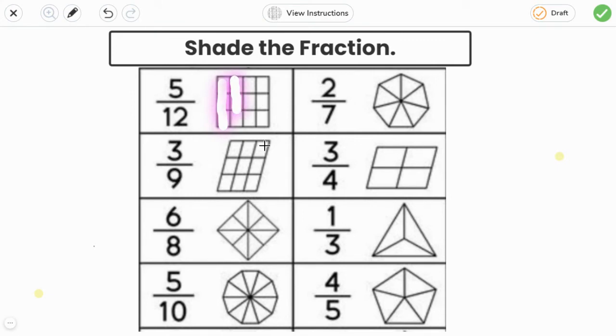Three by nine, just shading three parts. Six by eight, just shading six parts: one, two, three, four, five, six. And five tenths.